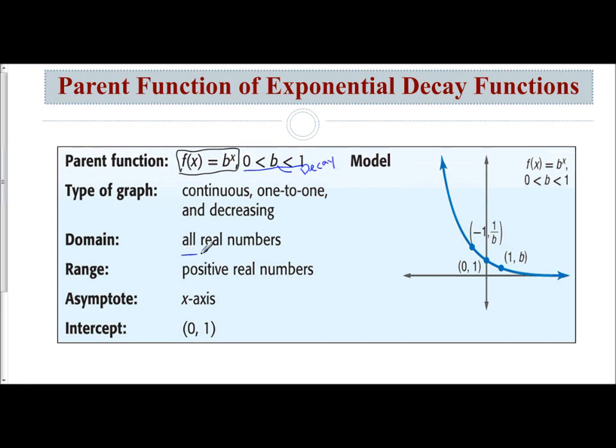The domain is still all real numbers. And your range is all positive real numbers, which means y is greater than 0. Our asymptote is the x-axis, which is the equation y equals 0. So we see the graph approaches the x-axis, but never crosses it. And we still have an intercept of 0, 1.